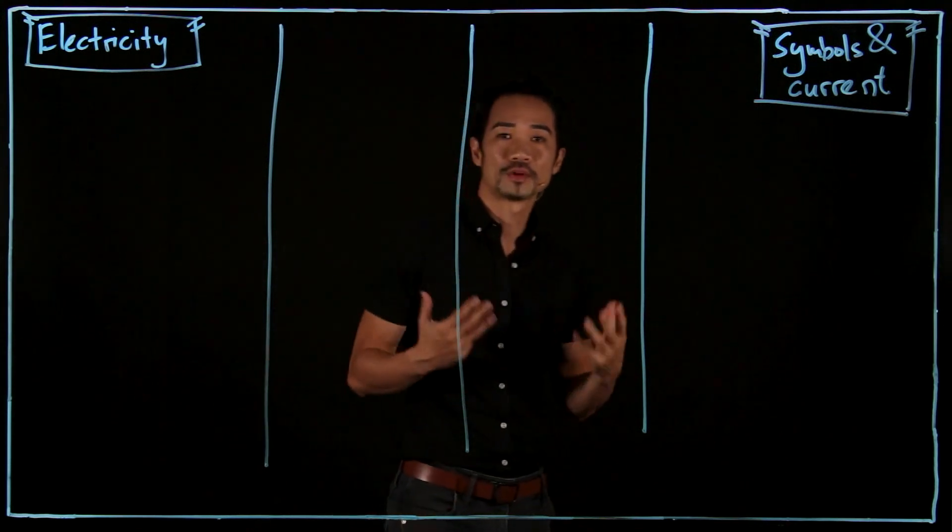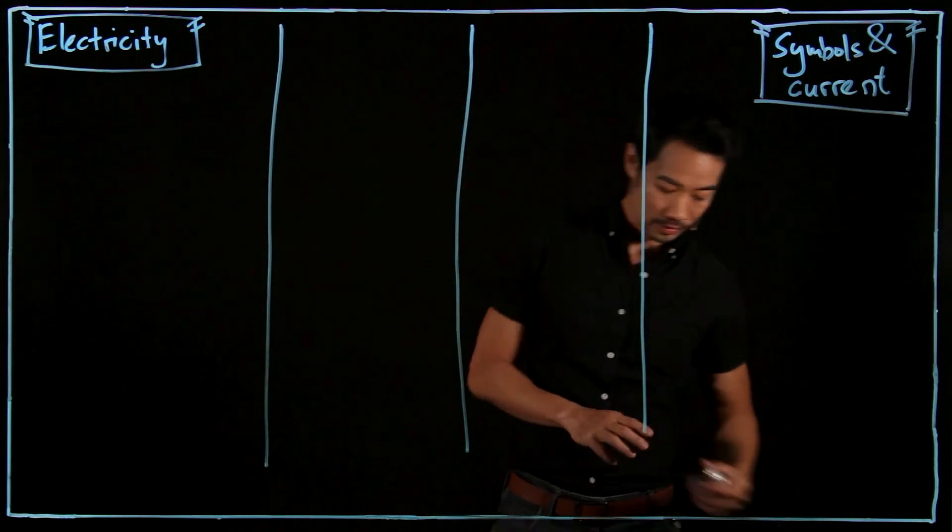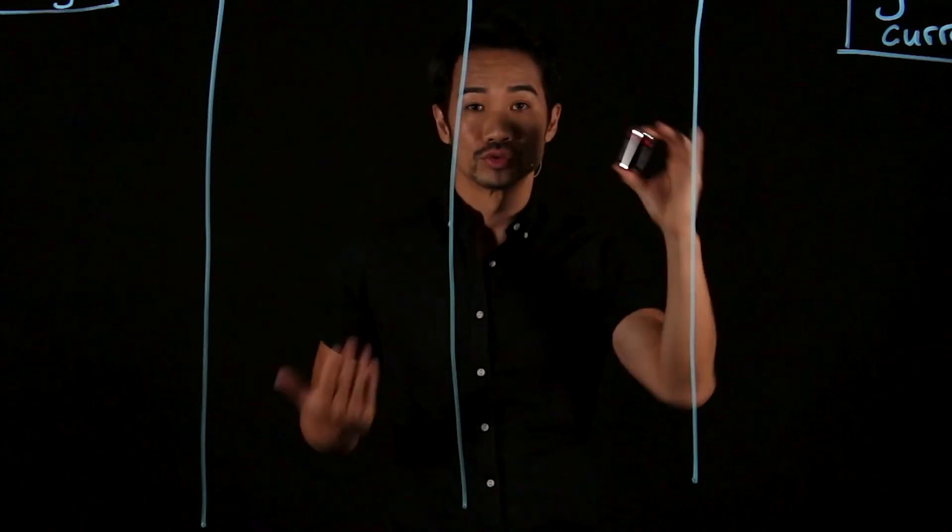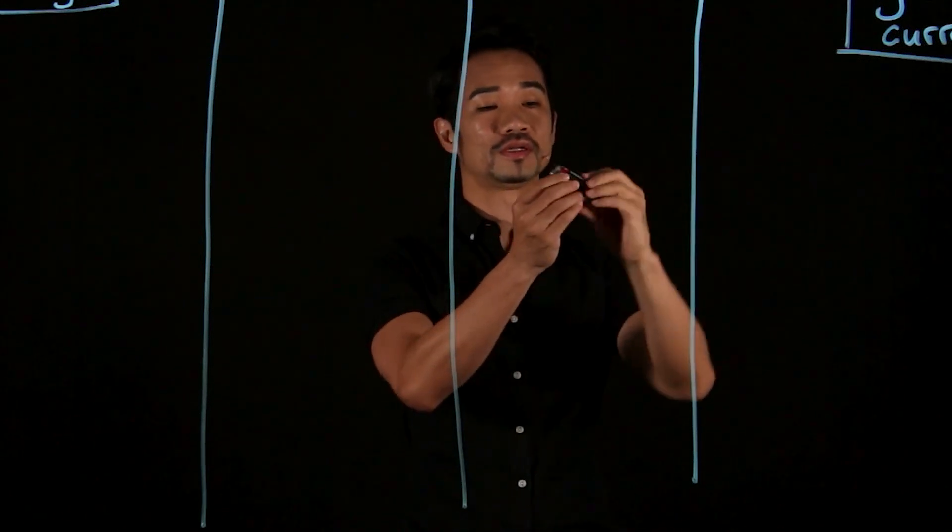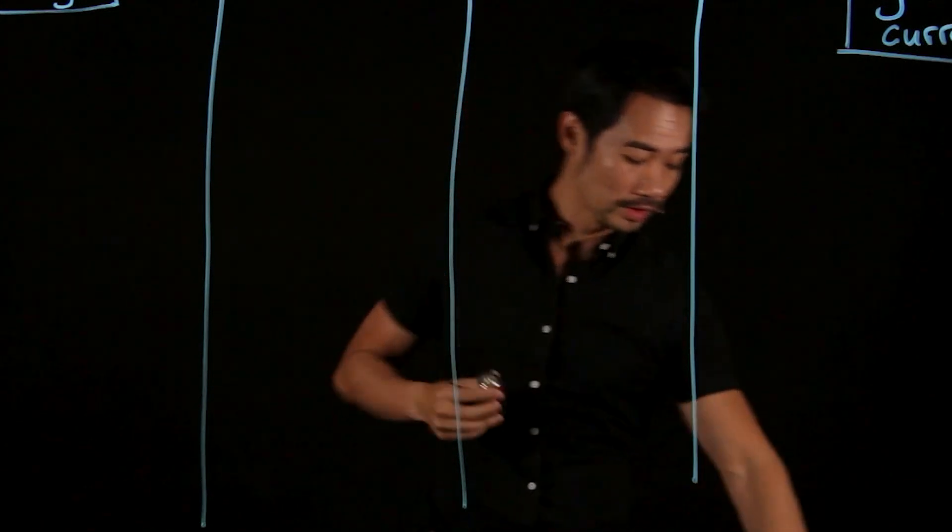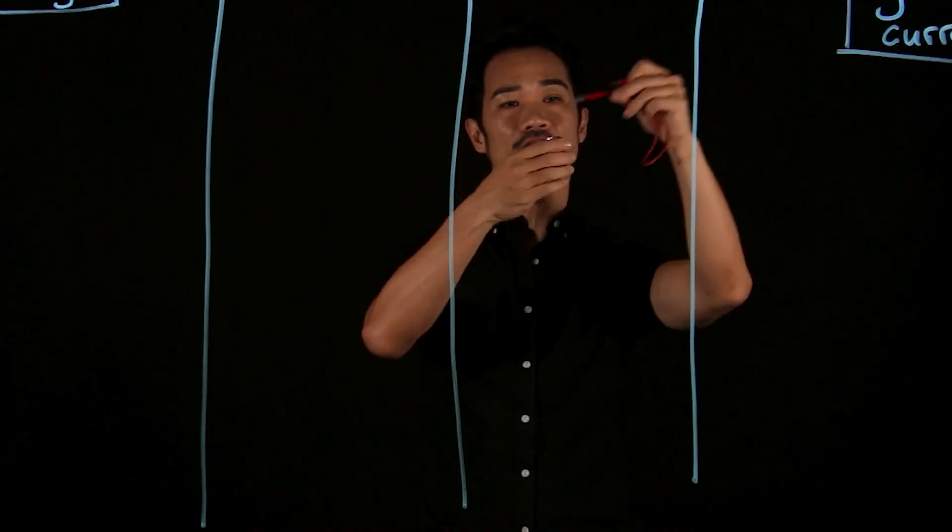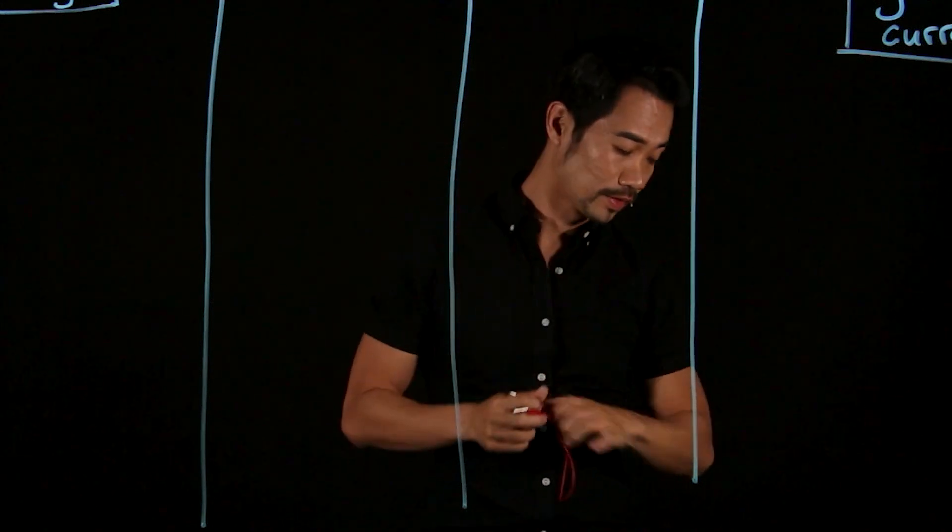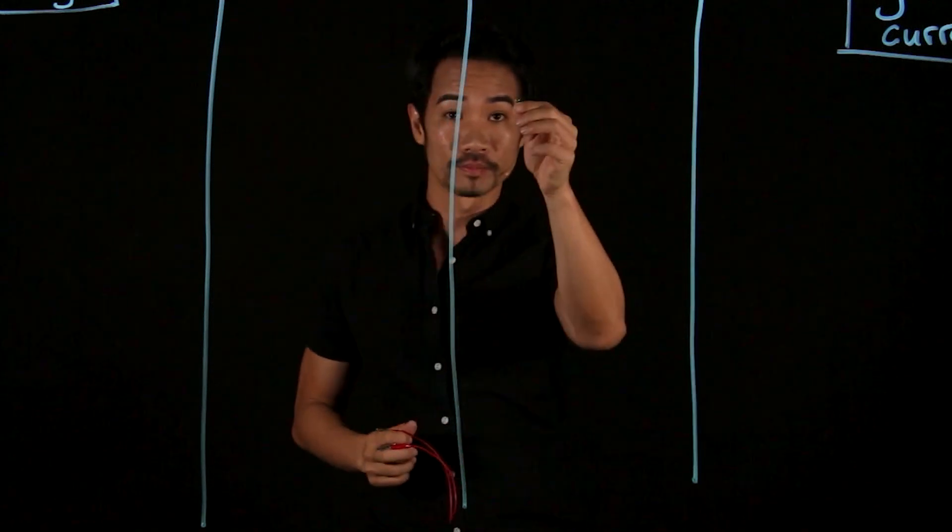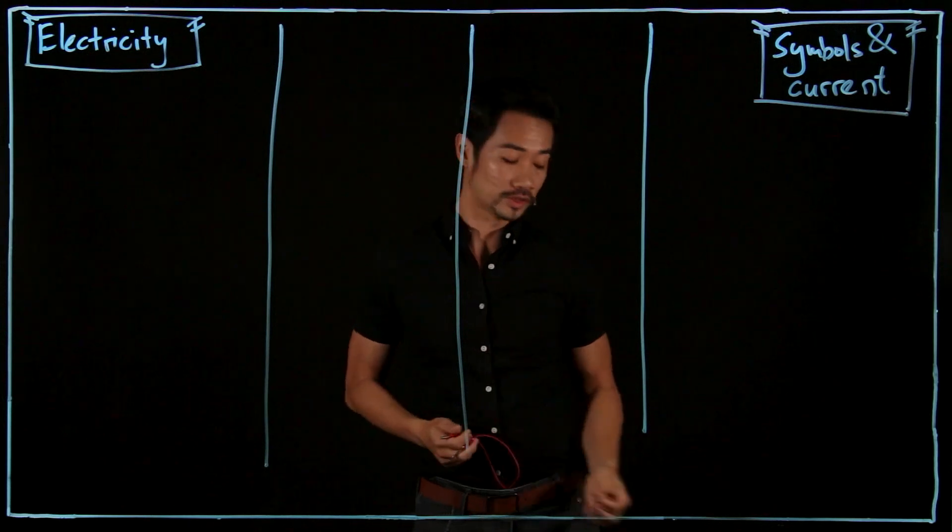So first of all, when we think about electricity, we often think about this thing, the battery or the dry cell. And then it comes in different sizes, and most of it has a pimple on top. And we kind of know that if we connect the battery to wires, and if we connect to a light bulb, the light bulb can potentially light up.